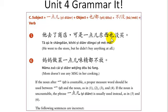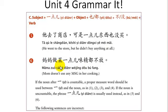Remember, 也 means 'also,' but here you're not translating it as 'also' — it means 'not even a little.' 妈妈做菜，一点儿味精都不放 — Mom doesn't use any MSG at all when she cooks.